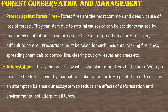Protect against forest fires: forest fires are the most common and deadly cause of loss of forest. They can start due to natural causes, accidents caused by humans, or even intentional acts. Once a fire spreads in a forest, it is very difficult to control, so precautions must be taken. Making fire lanes, spreading chemicals to control fire, and clearing out dry leaves and trees are some methods to protect against forest fires. Another very important method is afforestation — the process by which we plant more and more trees. We try to increase forest cover by manual transplantation or fresh plantation of trees, as an attempt to balance our ecosystem and reduce the effects of deforestation and environmental pollution.